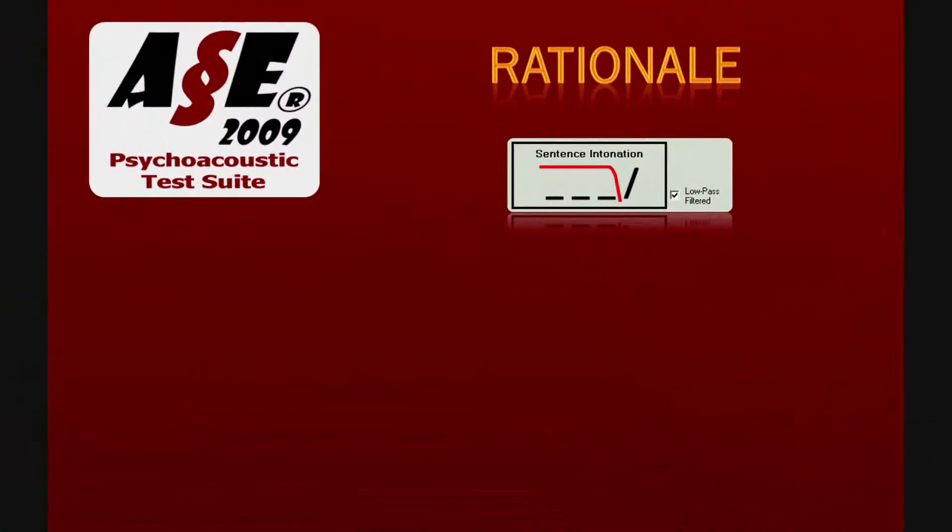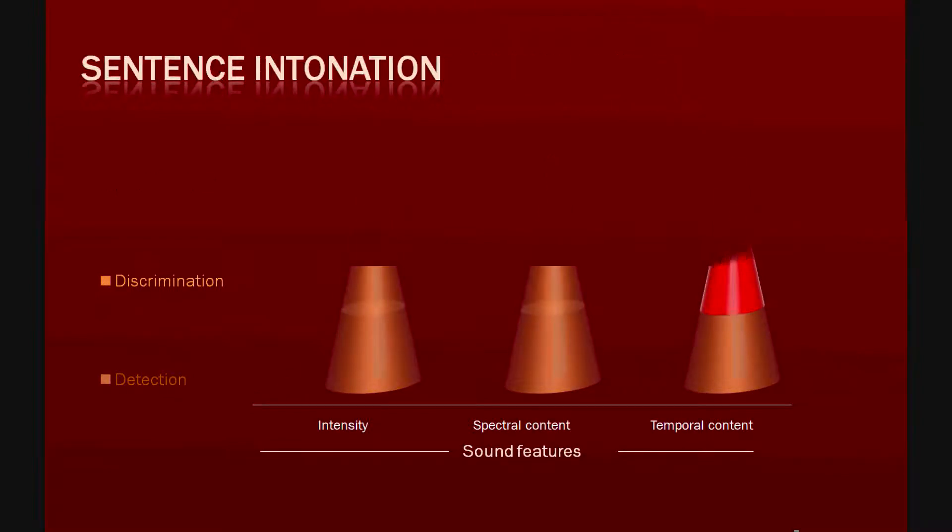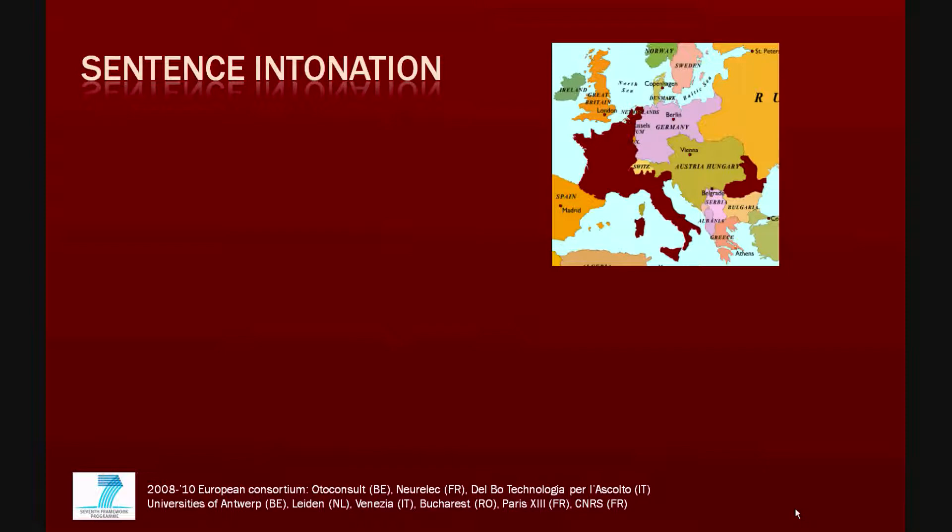The ACE prosodic tests consists of typical threshold measurement by means of an adaptive algorithm. The sentence intonation test is a discrimination task to assess the temporal coding of sound. It was developed by a European consortium consisting of companies and universities of Belgium, the Netherlands, Italy and Romania.